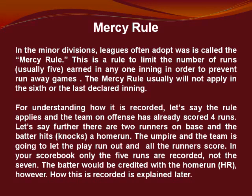Let's say further there are two runners on base and the batter hits a home run. The umpire and the team are going to let the play run out, and all the runners score. In your scorebook, only the five runs are recorded, not seven. The batter would be credited with the home run, however. How this is recorded is explained later.